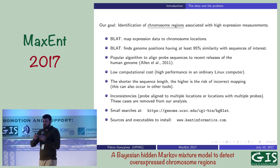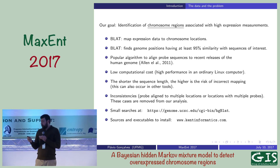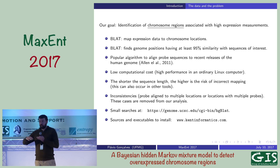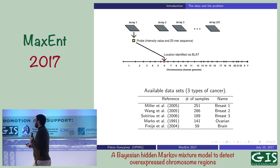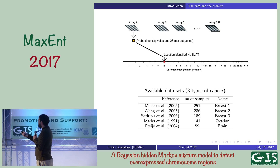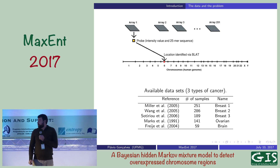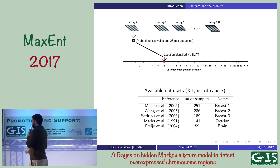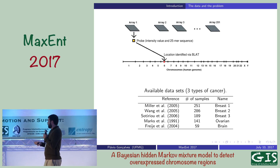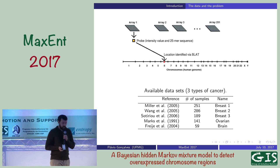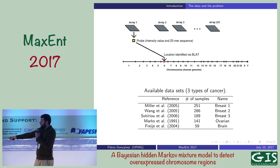For the data that we have — over 500,000 probes — once we applied BLAT, around 90,000 of them were mapped into the human genome. The others were not found, so we ignore them. For each probe in the microarray, BLAT searches along the human genome to identify the location where that probe appears. For our analysis, we have five data sets from five different studies concerning three types of cancer: three concerning breast cancer, one ovarian cancer, and one brain cancer, with replications ranging from 59 to 251 microarrays per study.